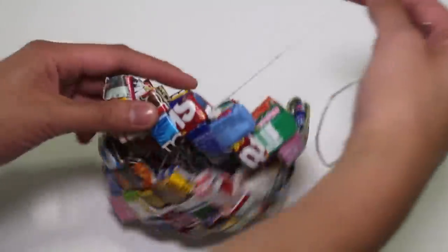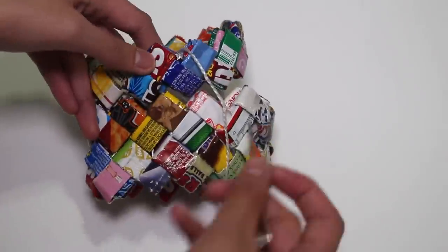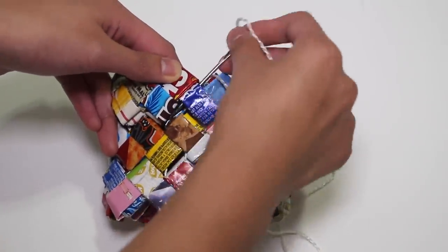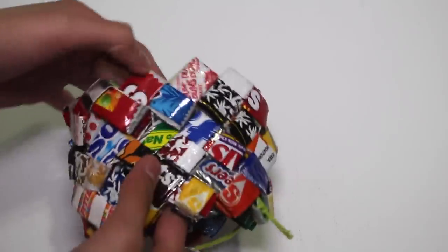Essentially, the sewing pattern is the same when you add on another line of wrappers. Start from the inside and work your way to the outside. Of course yours will look much better than this since you'll take your time, but now on to sewing the bottom.